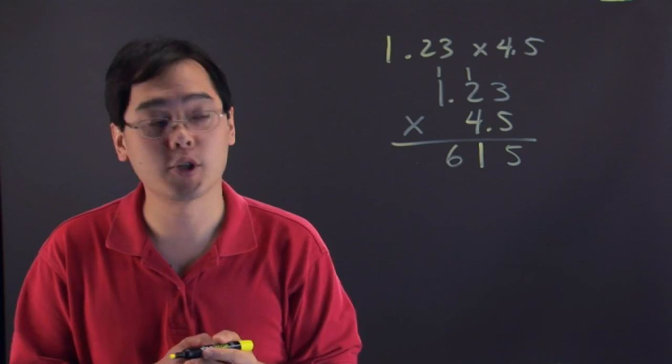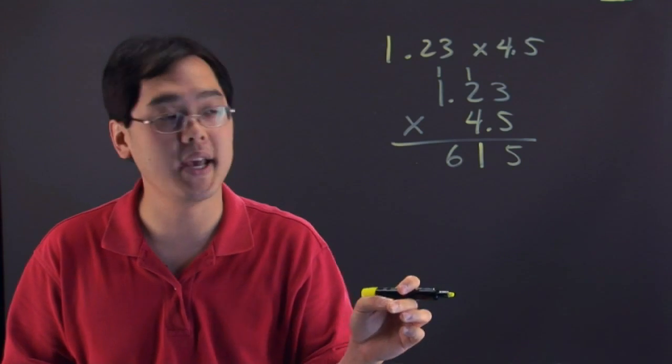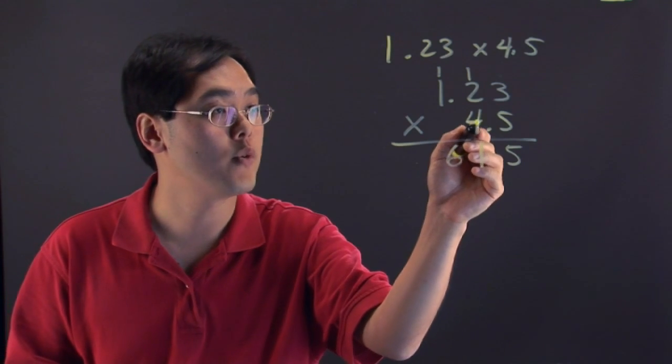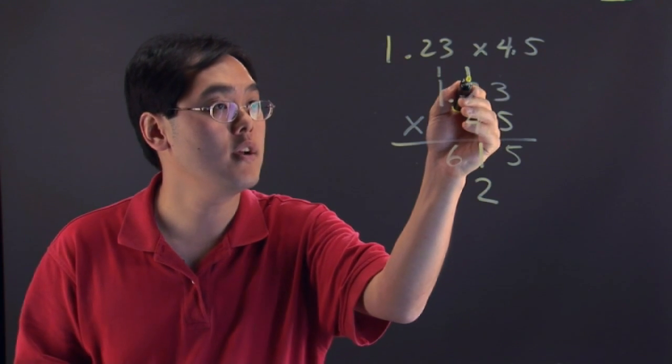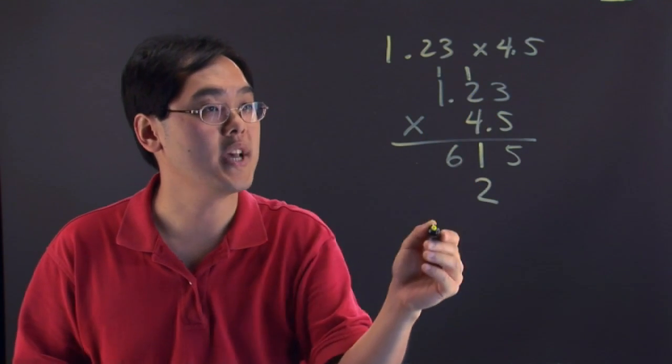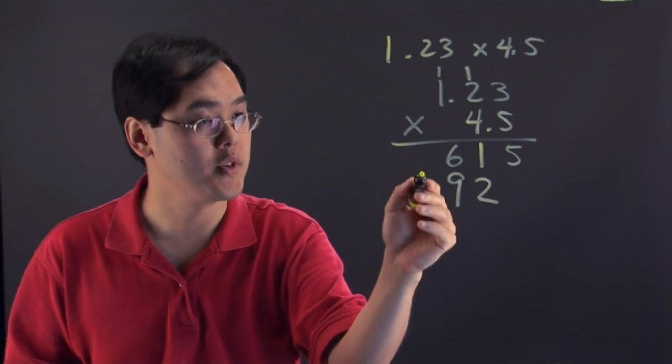Now as you would with regular multiplication, when you multiply the 4 you want to move over one space. So you have 4 times 3 is 12. You have another 1 here. 4 times 2 is 8. Add the 1 is 9. And 4 times 1 is going to give you 4.